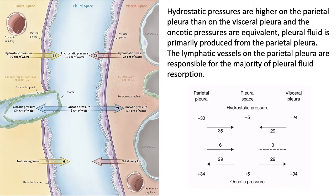Looking more closely at the parietal versus visceral space: the hydrostatic pressure on the parietal side is 30 cm of water, and on the visceral side it is 29 cm — a difference of about 5 cm — meaning the parietal space pushes more fluid from the parietal area. The oncotic pressure is equal between the visceral and parietal layers. Therefore, the net driving force is greater on the parietal side.